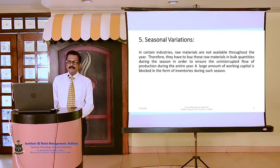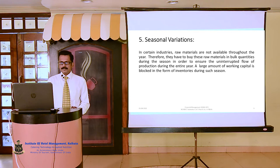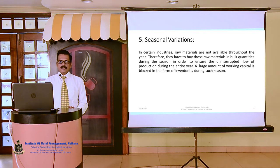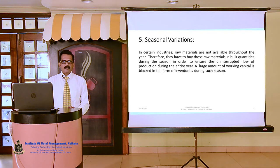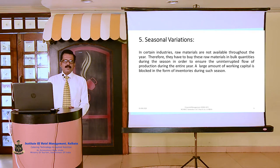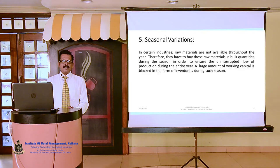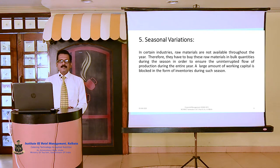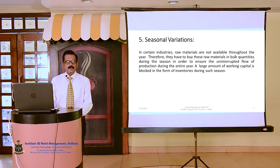Number five is seasonal variations. In certain industries, raw materials are not available throughout the year. Therefore, they have to buy these raw materials in bulk quantities during the season in order to ensure the uninterrupted flow of production during the entire year. As a result, a large amount of working capital is blocked in the form of inventories during such seasons.